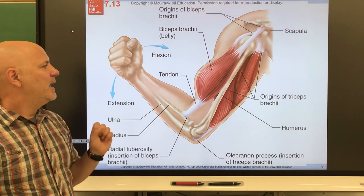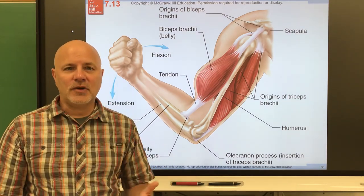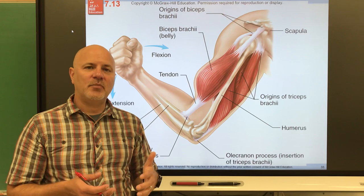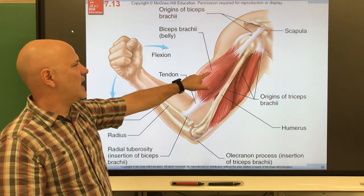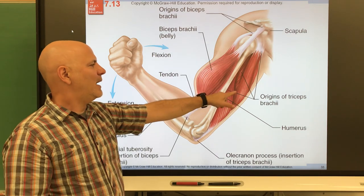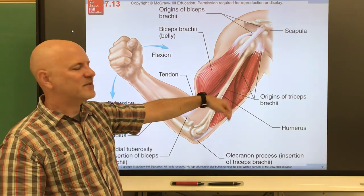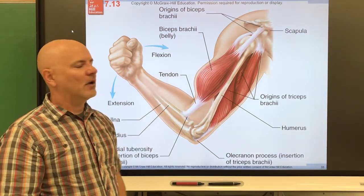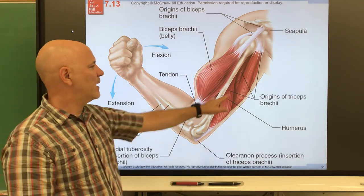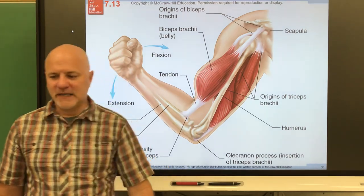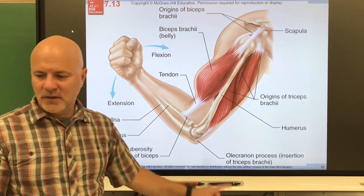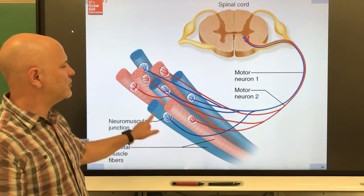Okay, now it depends on the contraction on what is the prime mover and what is the antagonist. So in a flexion, your biceps brachii is the prime mover. In an extension, like doing push-ups or something like that, your triceps brachii would become the prime mover. Okay, so the biceps brachii would be the antagonist there.